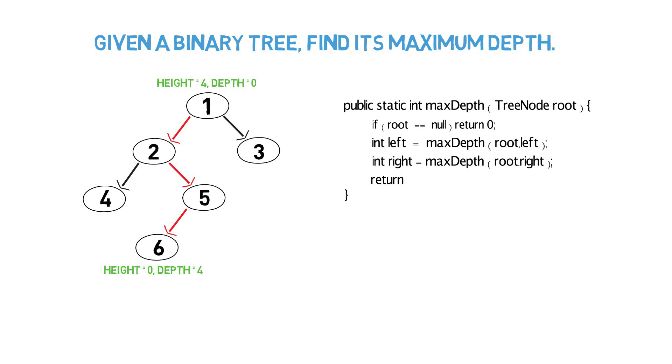Lastly, we need to return a value signifying its depth. We can do this by taking the max value of the left and right values. Then we add 1 to it for the current node. Once it's returned, it will continue its recursion until a final return value is given.